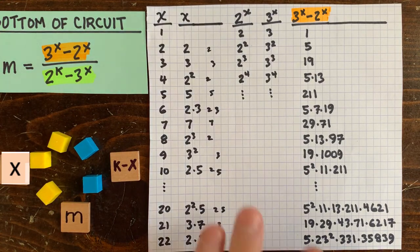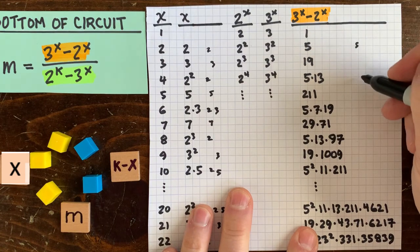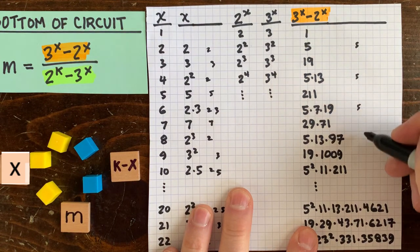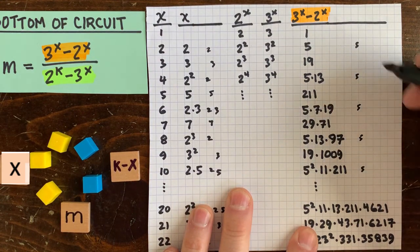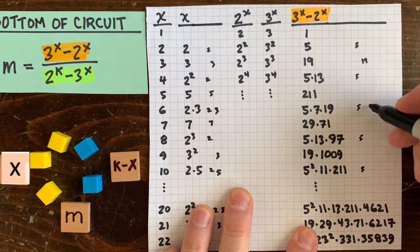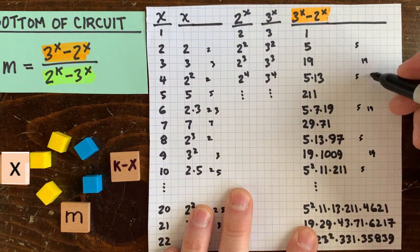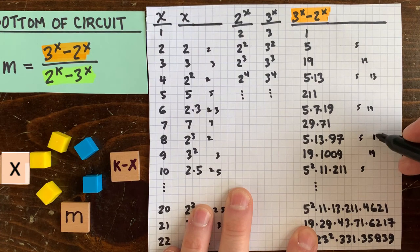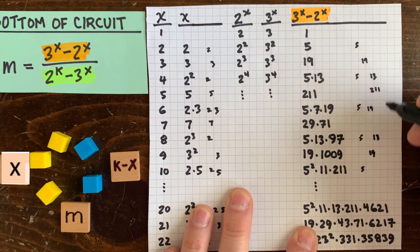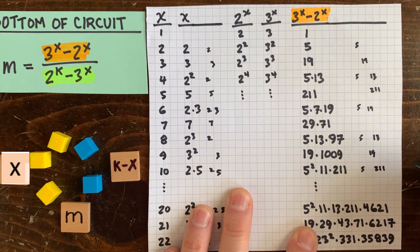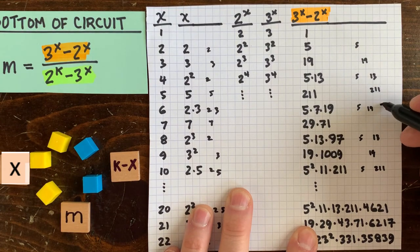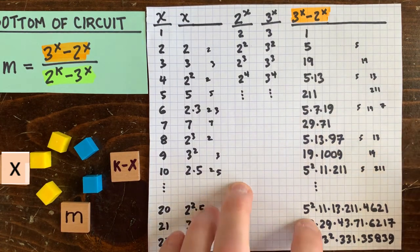Let's write down a 5 next to every even x. And then we write a 19 next to every third x. We write a 13 next to every fourth x. A 211 next to every fifth x. A 7 next to every sixth x, and so on. Three things to notice.